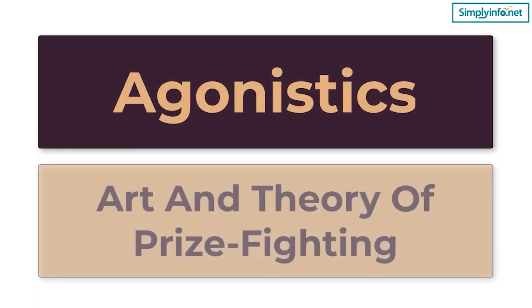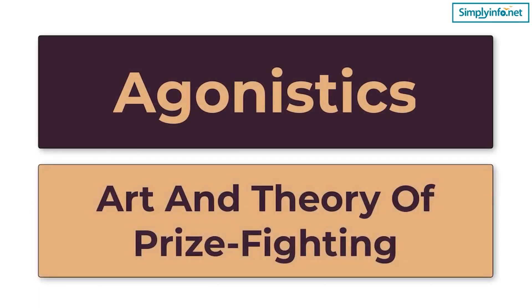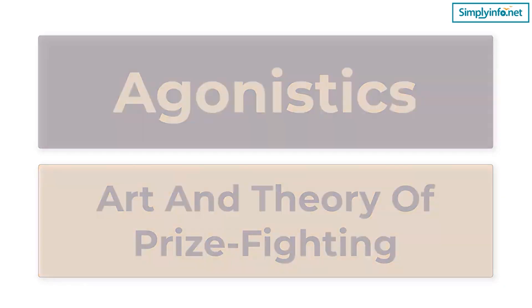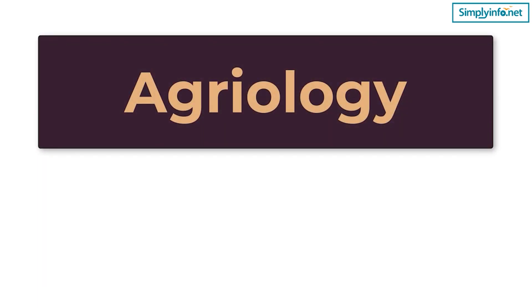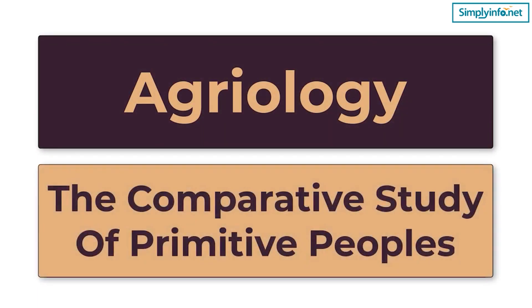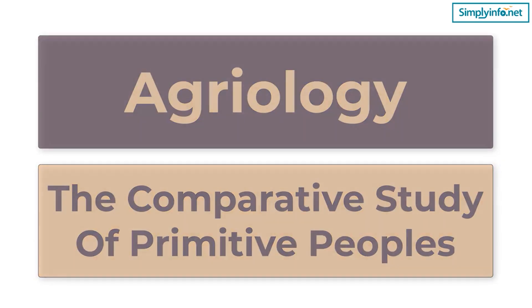Agonistics – Art and theory of prize-fighting. Agriology – The comparative study of primitive peoples.